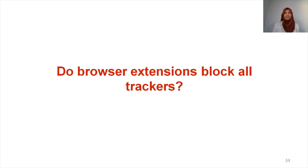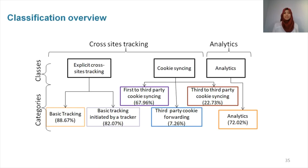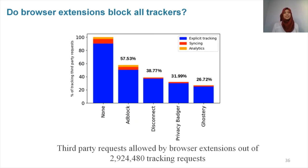The last question we want to answer is: how efficient are browser extensions in blocking all these trackers? We compare the efficiency of browser extensions against our three main classes: explicit cross-site tracking (marked in red), cookie syncing (marked in blue), and NIHX (marked in yellow). In this figure, we present the efficiency of browser extensions in blocking tracking requests. In the x-axis, we have the browser extensions studied — AdBlock, Disconnect, Privacy Badger, and Ghostery. In the y-axis, we have the percentage of tracking third-party requests that were missed by each extension. As you can see, Ghostery is the most efficient among the browser extensions, but it still failed to block over 26% of the requests detected by our methodology BehaviorTrack as tracking requests.